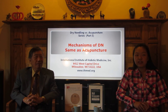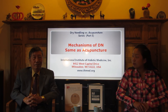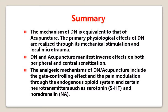To summarize the points about the effects and mechanisms of dry needling and acupuncture: 1. The mechanism of dry needling is equivalent to that of acupuncture; the primary physiological effects of dry needling are realized through its mechanical stimulation and local microtrauma. 2. Dry needling and acupuncture manifest inverse effects on both peripheral and central sensitization. 3. The analgesic mechanisms of dry needling or acupuncture include the gate control effect and pain modulation through the endogenous opioid system and certain neurotransmitters such as serotonin (5-HT) and noradrenaline (NA).